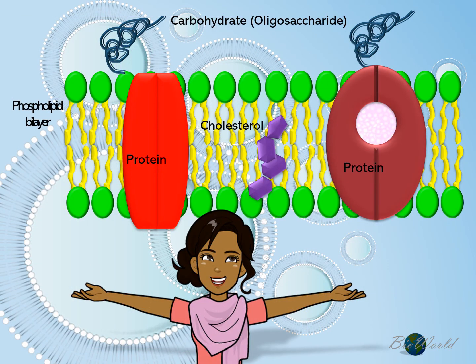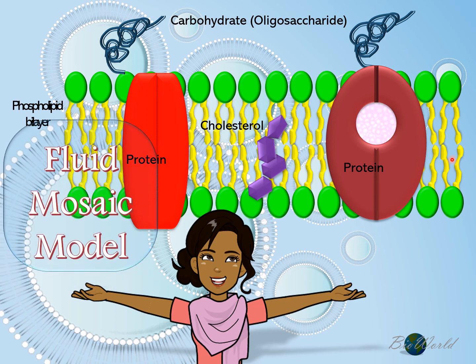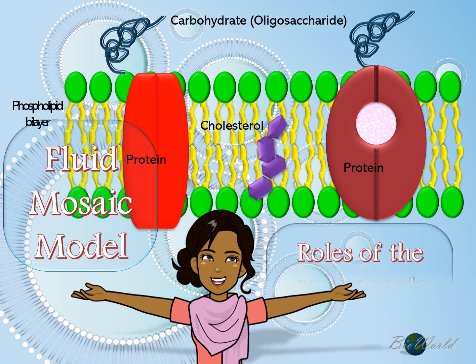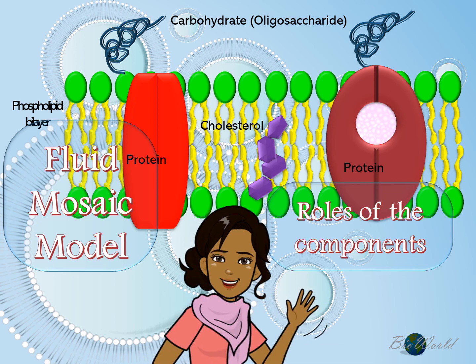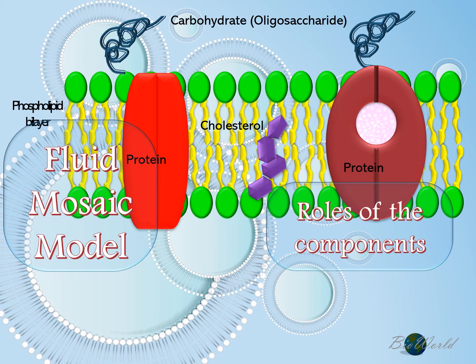With that, we have learned about the structure of the plasma membrane based on the fluid mosaic model as proposed by Singer and Nicholson. We've also learned why it is called fluid and why it is called mosaic. And in conclusion, we learned about the roles of each component of the membrane. So I'll see you in my next video. Bye-bye, everybody. Thank you.